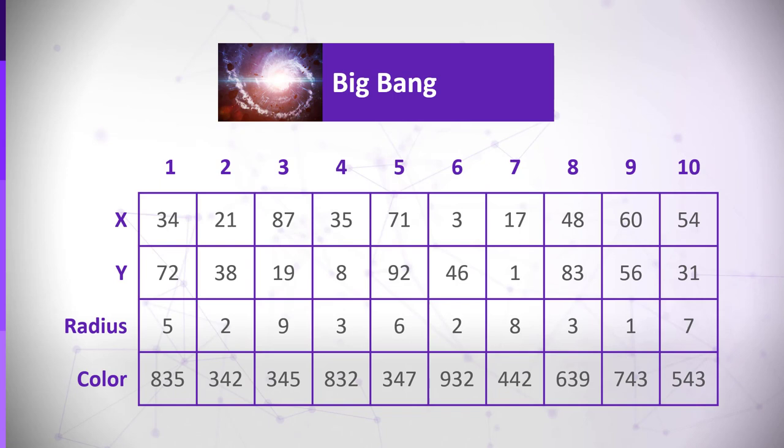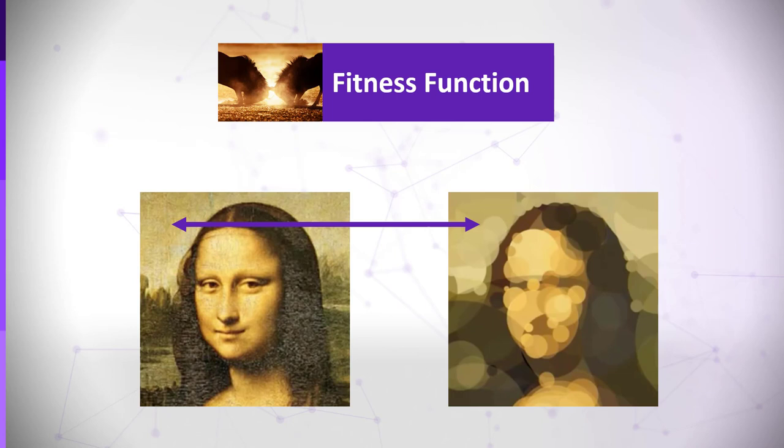Next, it's the famous fitness function. This is quite easy. For each matrix, we will create the phenotype, the picture it represents, and compare the picture to the original Mona Lisa. We will just go pixel by pixel and quantify how similar they are.